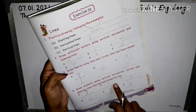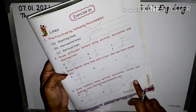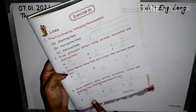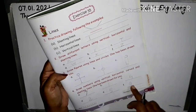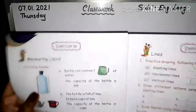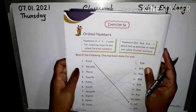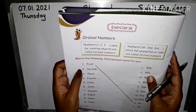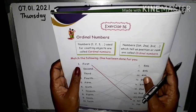Draw numbers: 1, 4, 2, 5, 9. Next page — exercise 56: ordinal numbers. Numbers one, two, three used for counting objects are called cardinal numbers.